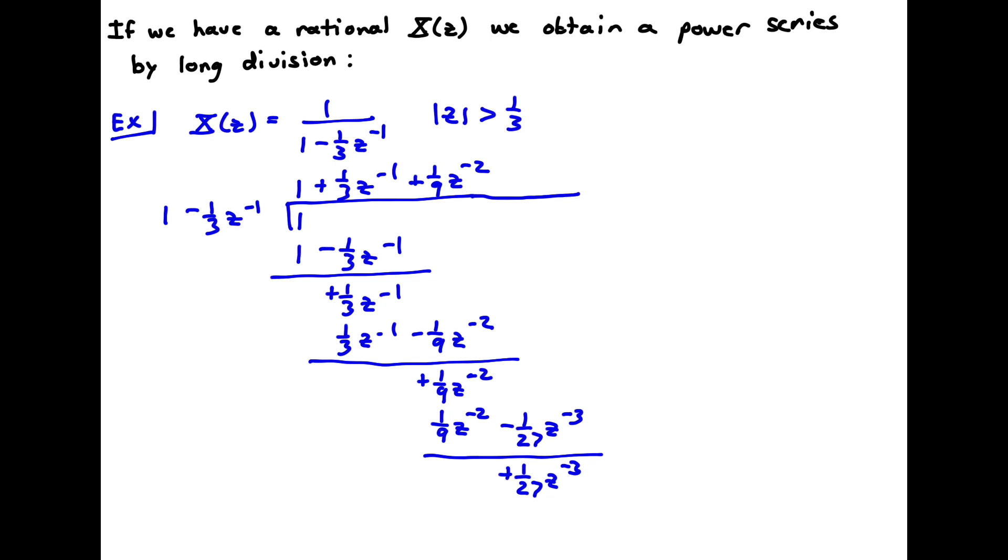Okay, so then to get that up here, I'd have to put in a 1 27th z to the minus 3 plus dot dot dot. And I can start to see a pattern here in this expression. I'm going to get a pattern out, and now I'm just taking the inverse transform of each term from the table.